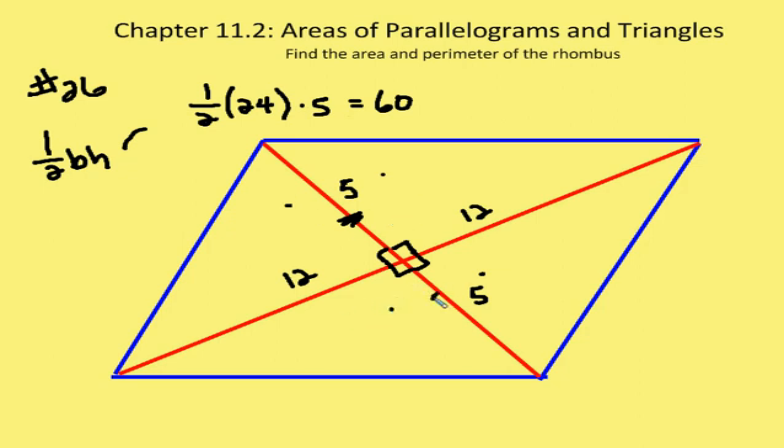Then we do the same thing on the bottom portion. We have two different triangles that are acting as one. And we add them together, we have one half, again, of base times height, or one half of 24 times 5, which again is equal to 60. So we find that the area of our parallelogram is 120 units squared.